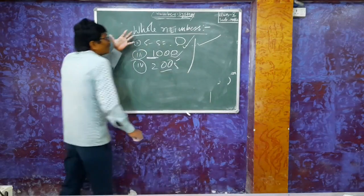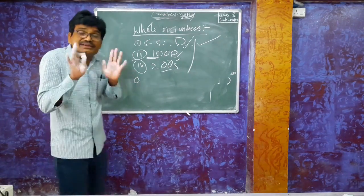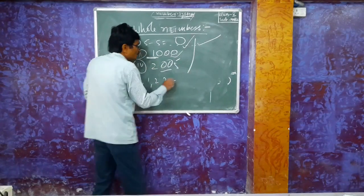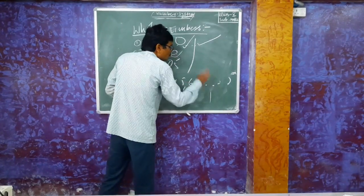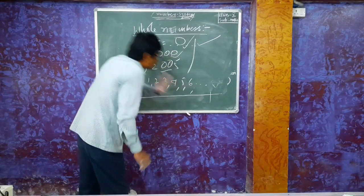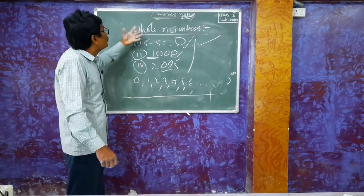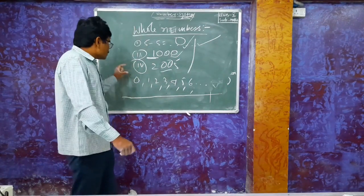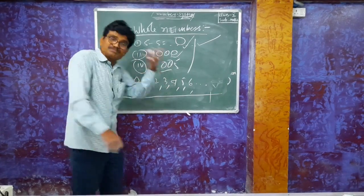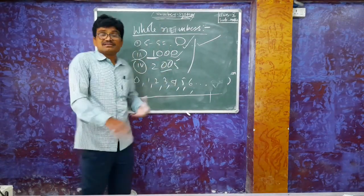When zero is included in the family of natural numbers — 0, 1, 2, 3, 4, 5, 6 and so on — this new set of numbers is known as whole numbers.